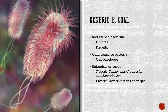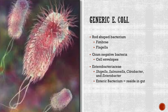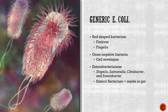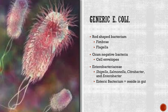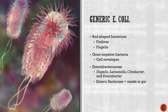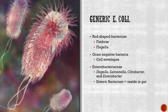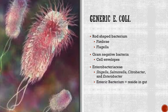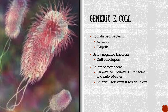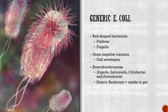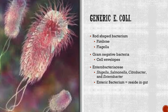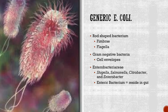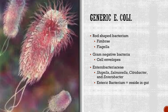E. coli is a gram-negative bacteria, which means it does not retain the crystal violet stain used in the gram-staining method of bacterial cell differentiation. These cells are characterized by their cell envelopes, which are a thin peptidoglycan wall in between the cell membrane and the bacterial outer membrane. E. coli are a member of the bacterial group Enterobacteriaceae. Evolutionarily-related members of this group include pathogens Shigella, Salmonella, Citrobacter, and Enterobacter.